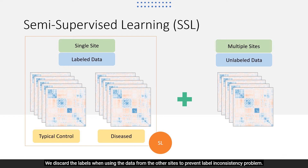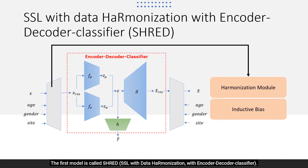We discard the labels when using the data from the other sites to prevent the label inconsistency problem. In this project, two model architectures were proposed. The first model is called SHRED — SSL with Data Harmonization with Encoder-Decoder Classifier.